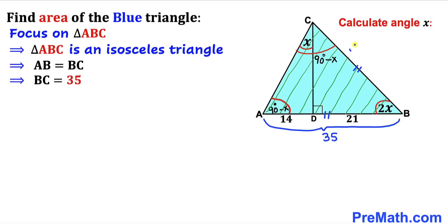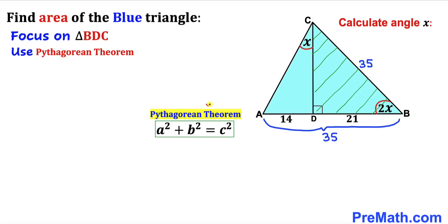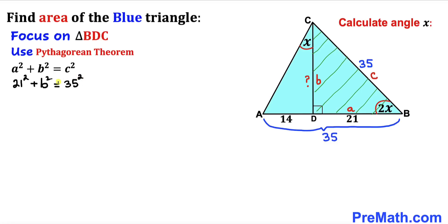Now focusing on right triangle BDC, we apply the Pythagorean theorem: a² + b² = c². We label the hypotenuse BC as side c (35 units), BD as side a (21 units), and the unknown CD as side b. Substituting: 21² + b² = 35², giving us 441 + b² = 1225.